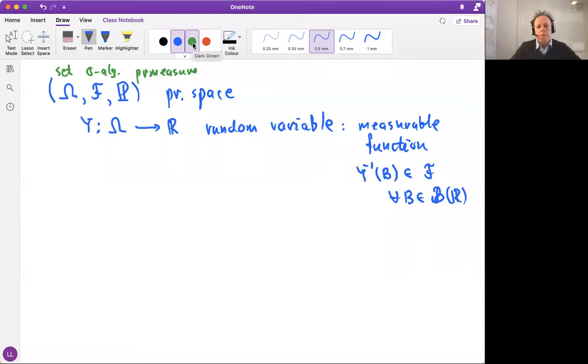And what it means, it means that the pre-images behave well. So it means that the pre-image of a Borel set B belongs to F. For all B being a measurable set on the real line, that means a Borel set. And what we will do is actually we will abbreviate this just to write B. So that's going to be B for named after Émile Borel, a French mathematician.